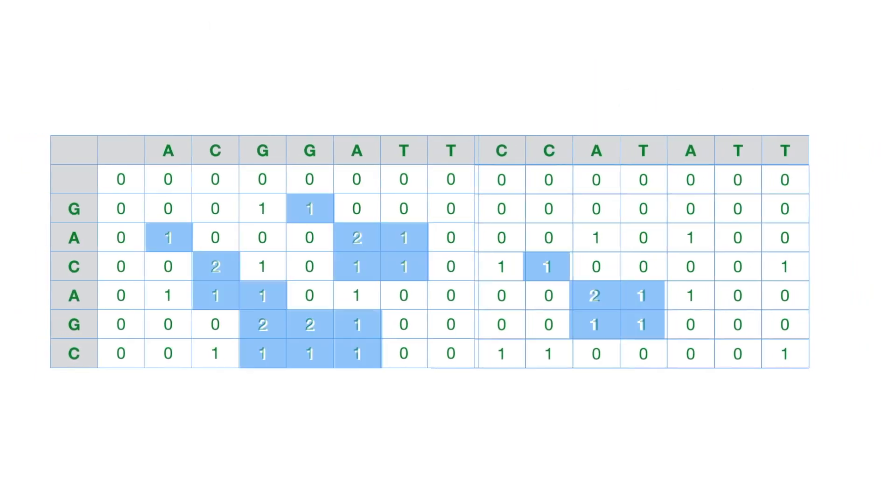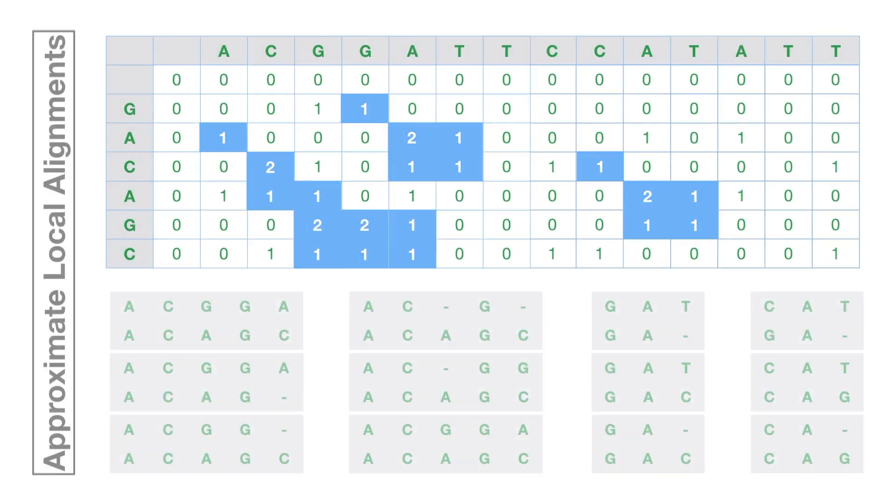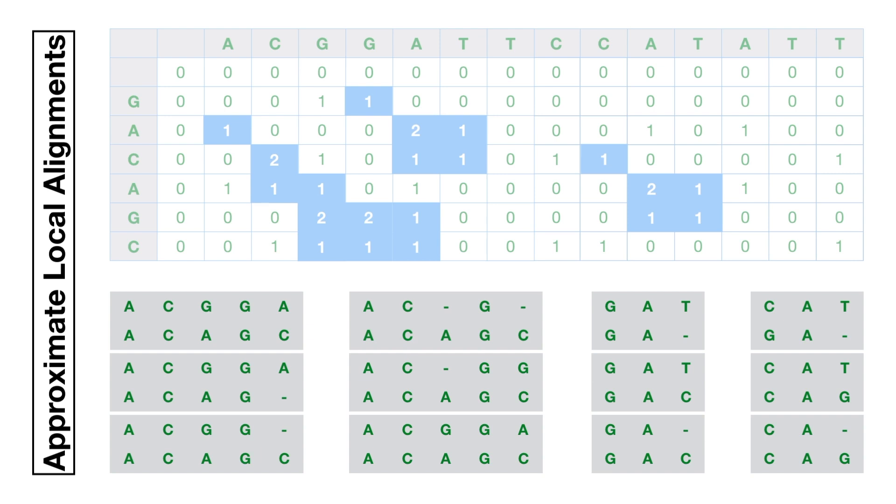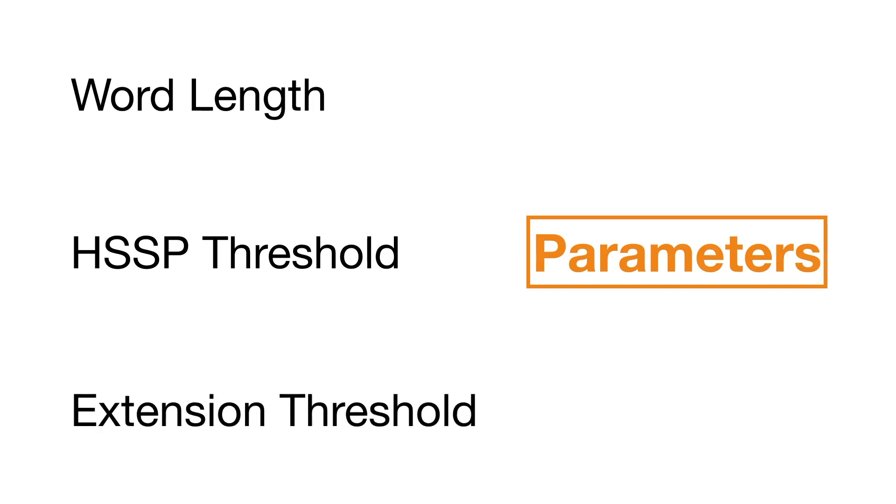Here is a summary of the previous extensions, which yield the following approximate local alignments. Besides the usual parameters used for local alignments, BLAST uses a prefixed word length, HSSP threshold, and an extension threshold.